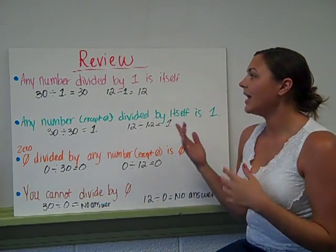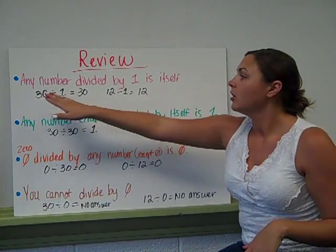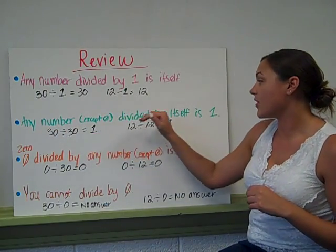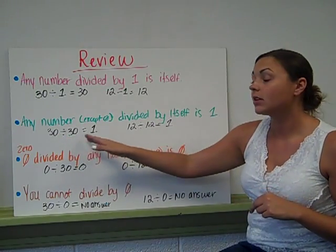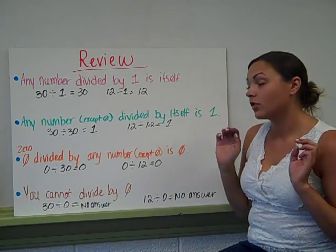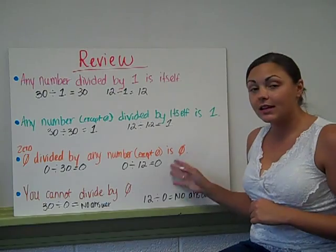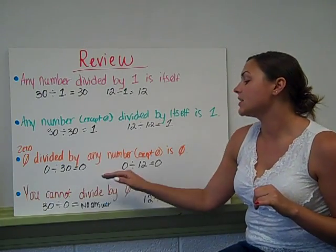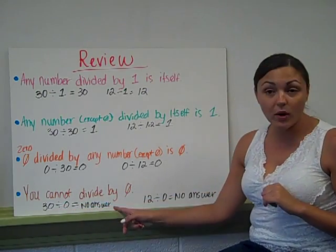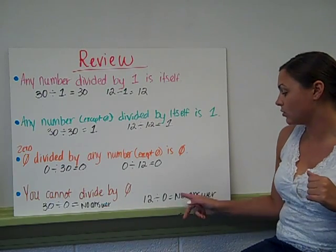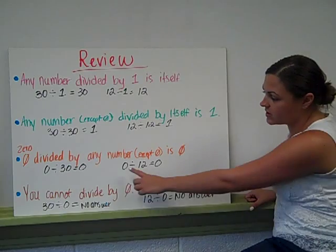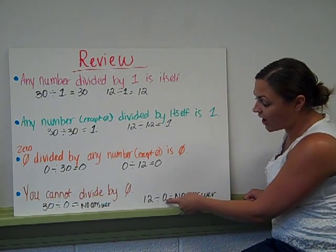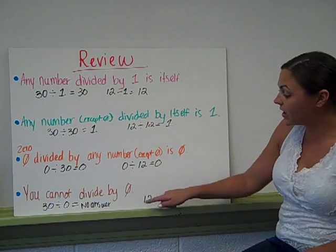So our review. Any number divided by 1 is itself: 30 divided by 1 equals 30, 12 divided by 1 equals 12. Second rule: any number divided by itself is 1 — 30 divided by 30 is 1, 12 divided by 12 is 1. Third rule: 0 divided by any number is 0 — 0 divided by 30 is 0, 0 divided by 12 is 0. Fourth rule: you cannot divide by 0 — 30 divided by 0 has no answer, 12 divided by 0 has no such answer. The difference between these two rules is where the 0 is located. Here the 0 is the dividend and the answer is 0; here the 0 is the divisor so it gives no answer. You just have to pay attention to where the 0 is in your problem.